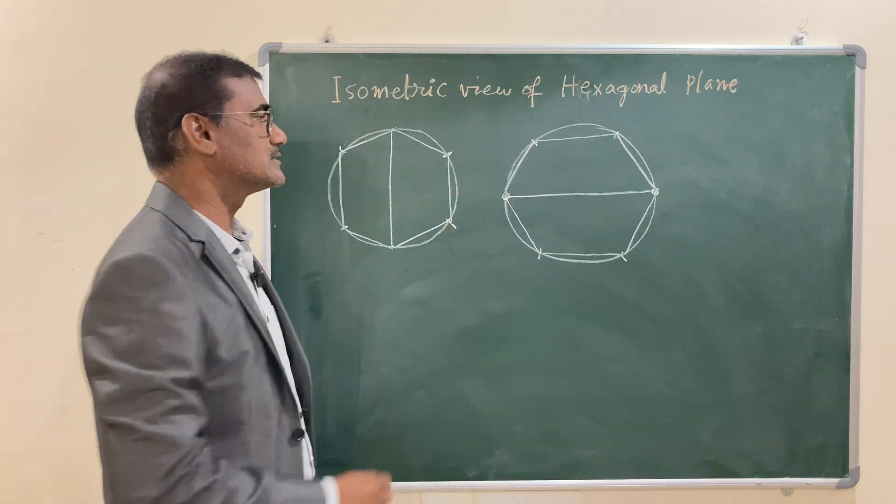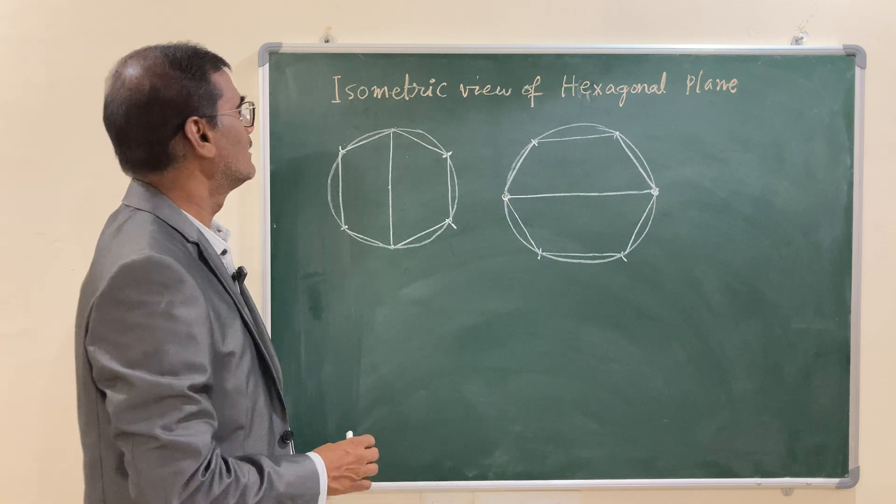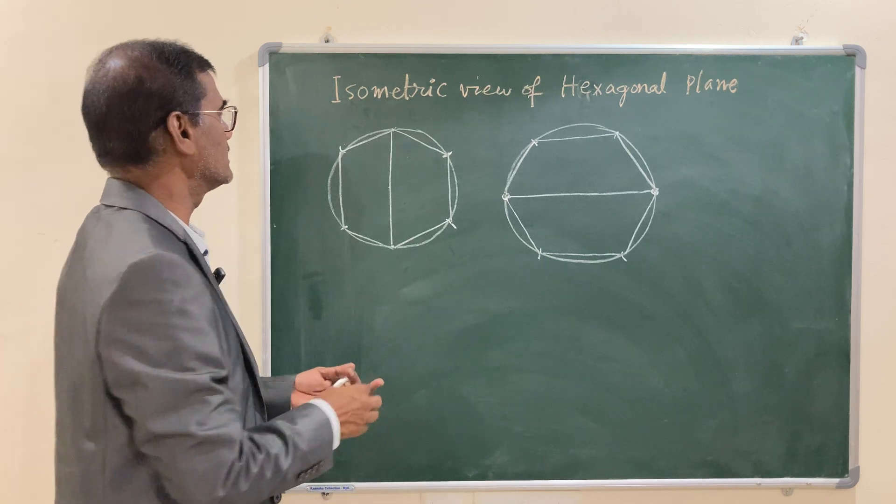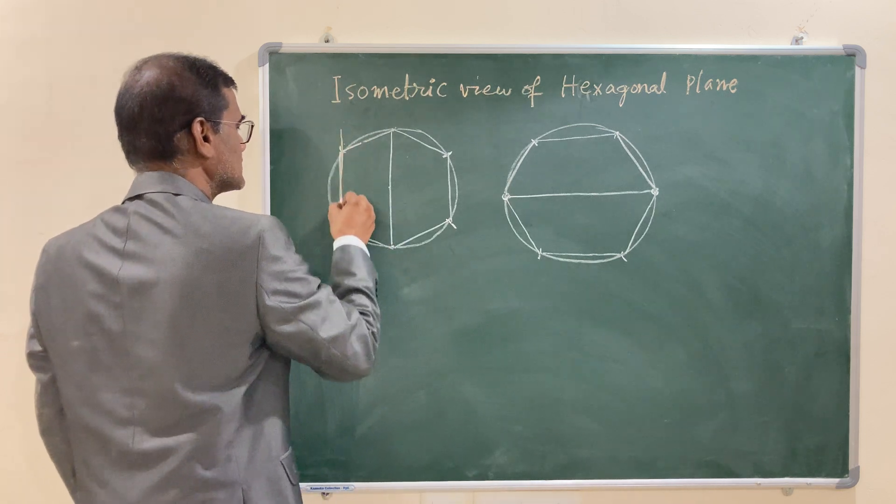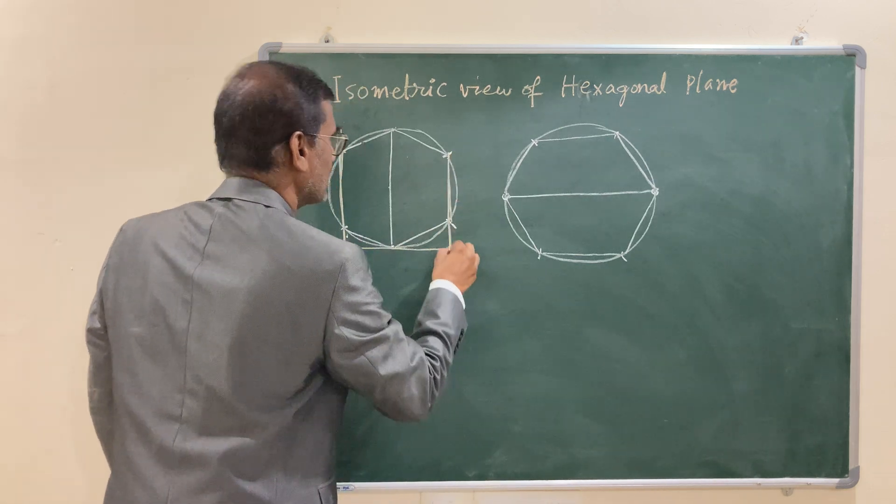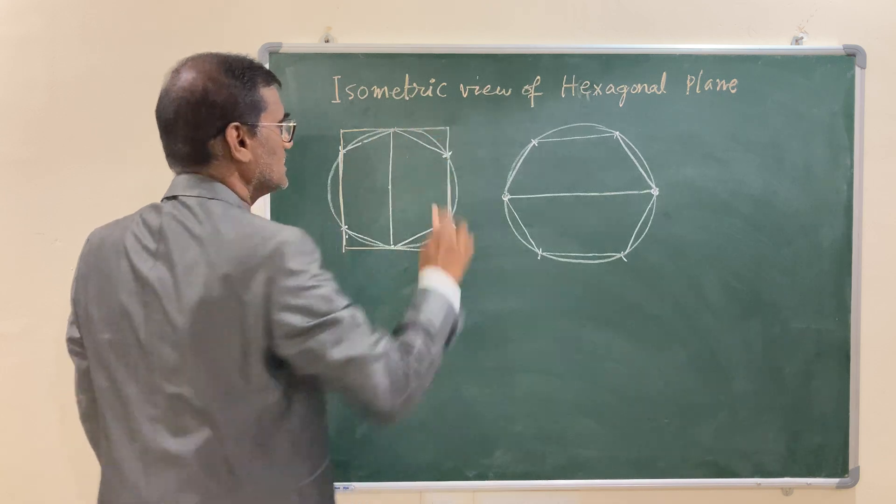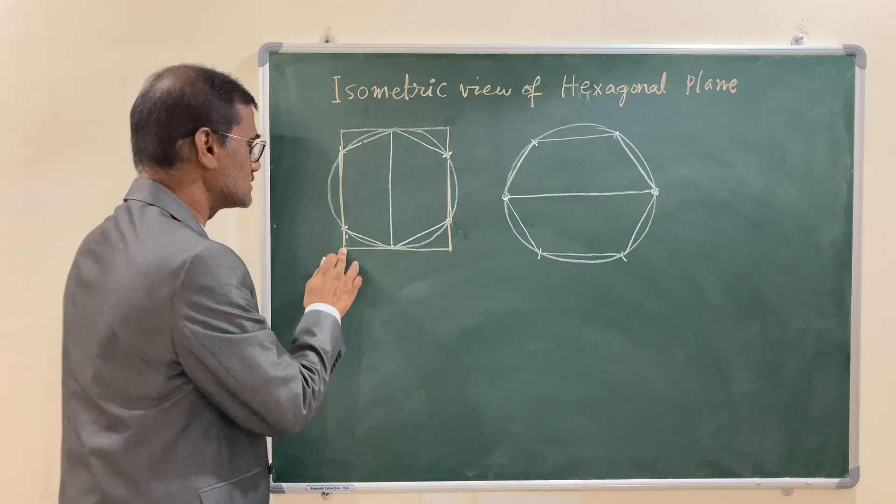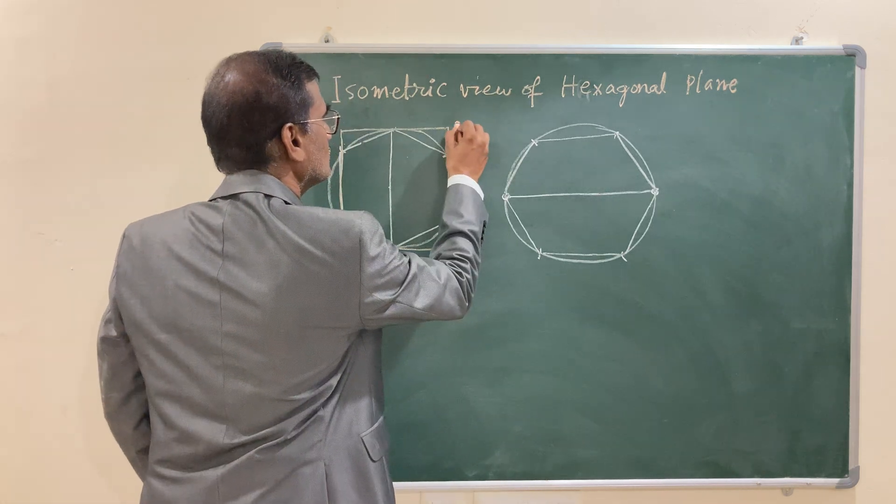So, this becomes mandatory because certain edges are non-isometric. So, in this case, what you have to do is you have to go for isometric. Inscribe this hexagon in a rectangle. So, let us inscribe this hexagon in a rectangle because you want to draw the isometric view of this rectangle in which you have all the edges are isometric. Let us call this as 1, 2, 3, 4.